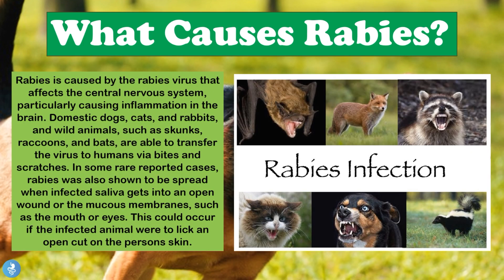Rabies is a zoonotic disease caused by the rabies virus that affects the central nervous system, particularly causing inflammation in the brain. Domestic dogs, cats, and rabbits, and wild animals such as skunks, raccoons, and bats are able to transfer the virus to humans via bites or scratches. In some rare reported cases, rabies was also shown to be spread when infected saliva gets into an open wound or into the mucous membranes of an individual, such as their mouth or eyes — for example, if an infected animal were to lick an open cut.